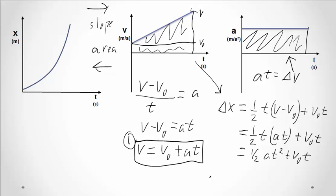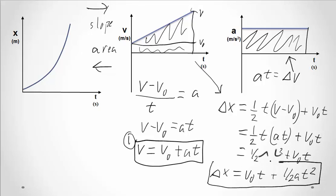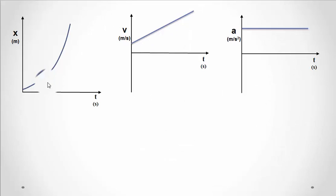So, I can substitute in at for that v minus v-naught. And then we can combine those t's. So, we've got one-half at squared. And not that it matters, but usually when this equation is written, the v-naught term is written first. So, here is our second equation. Your displacement is your initial velocity times your time, plus one-half acceleration times time squared.